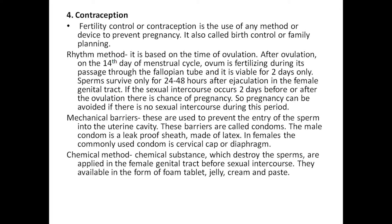Pregnancy can be avoided if there is no sexual contact during this period. Second is mechanical barriers, used to prevent entry of sperm into the uterine cavity. These barriers are called condoms. Male condoms are leak-proof sheaths made of latex. In females, the commonly used device is the cervical cap or diaphragm.